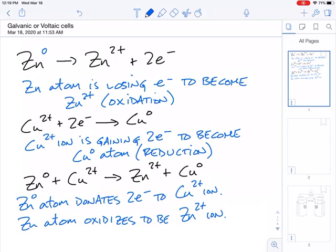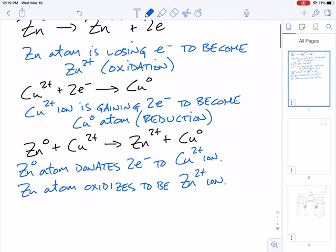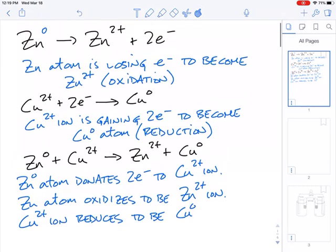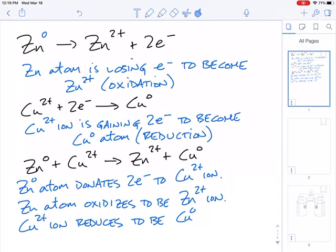Another way of describing that, we could say that the zinc atom oxidizes to become the zinc 2+ ion. Similarly, we could talk about the copper 2+ ion, which reduces to become Cu zero.